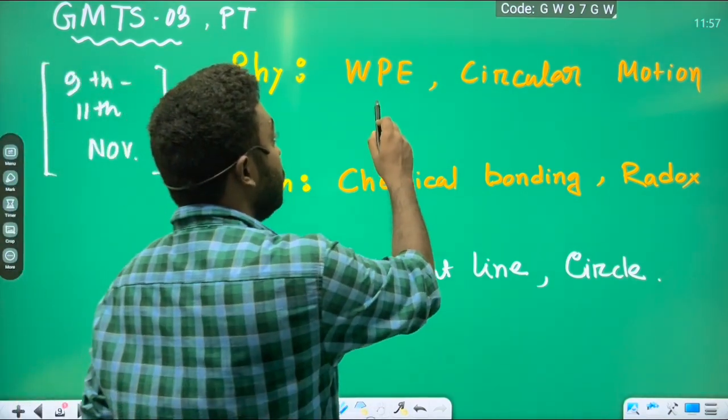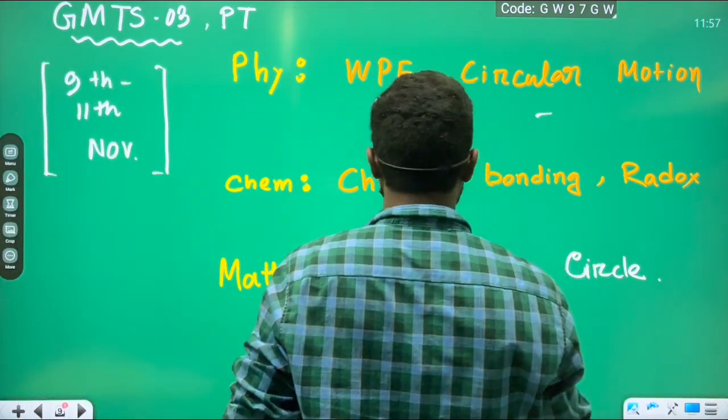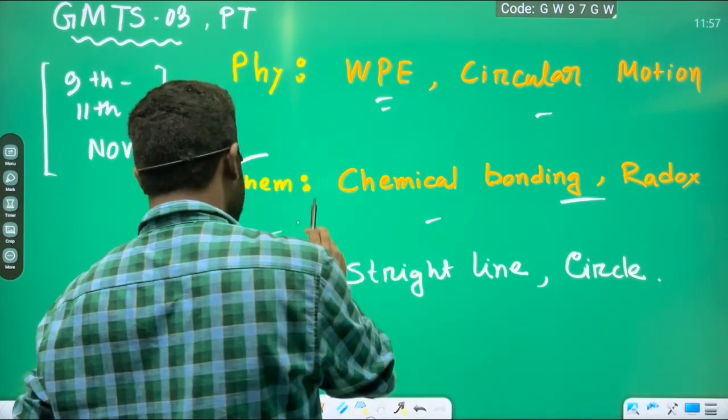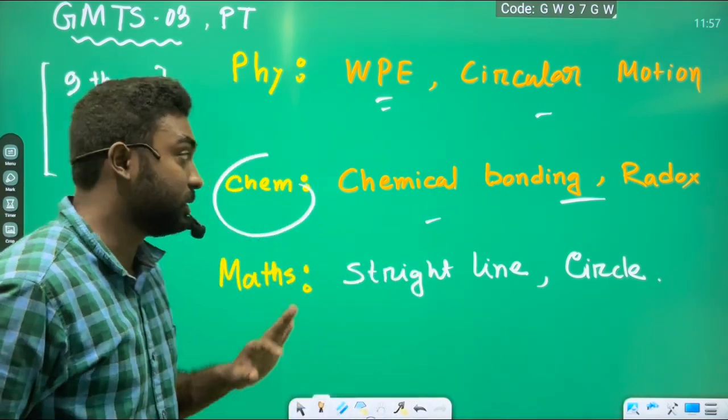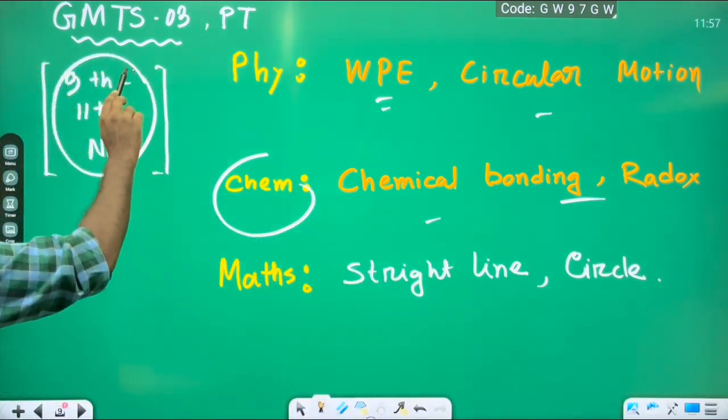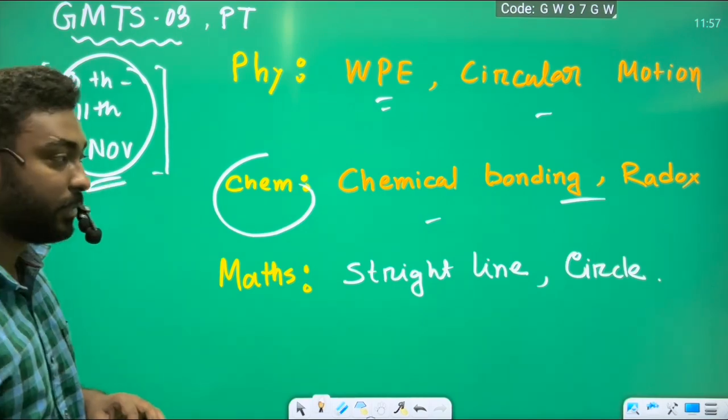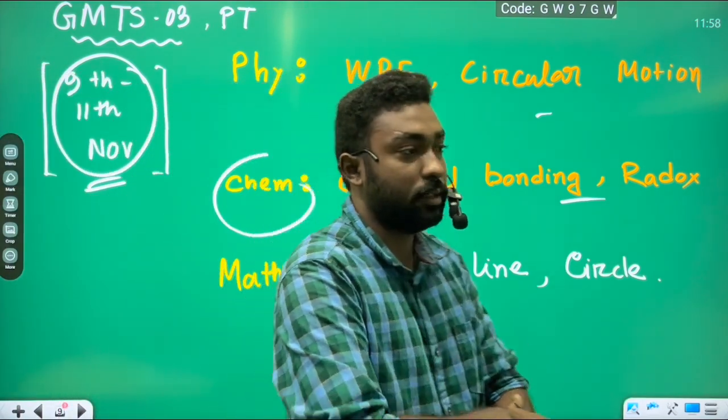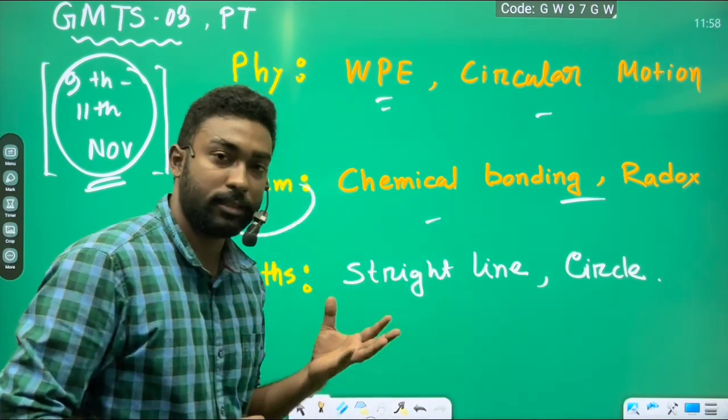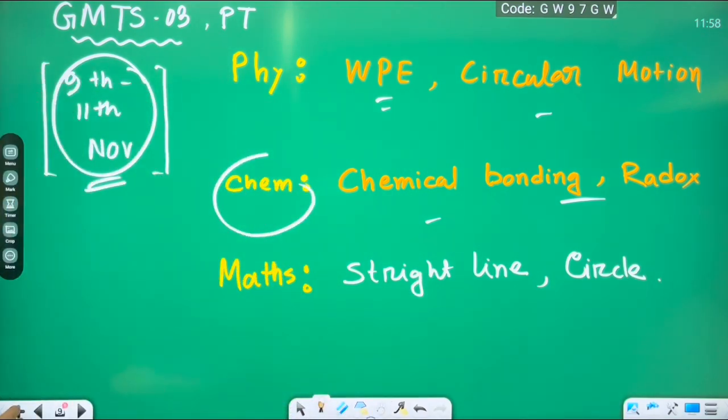GMTS 3, third test will include work power energy, circular motion, chemical bonding, redox will be in chemistry, math part, straight line and circle. The dates are 9th and 11th November. Before test, keeping track of classroom study is important in class 11th.